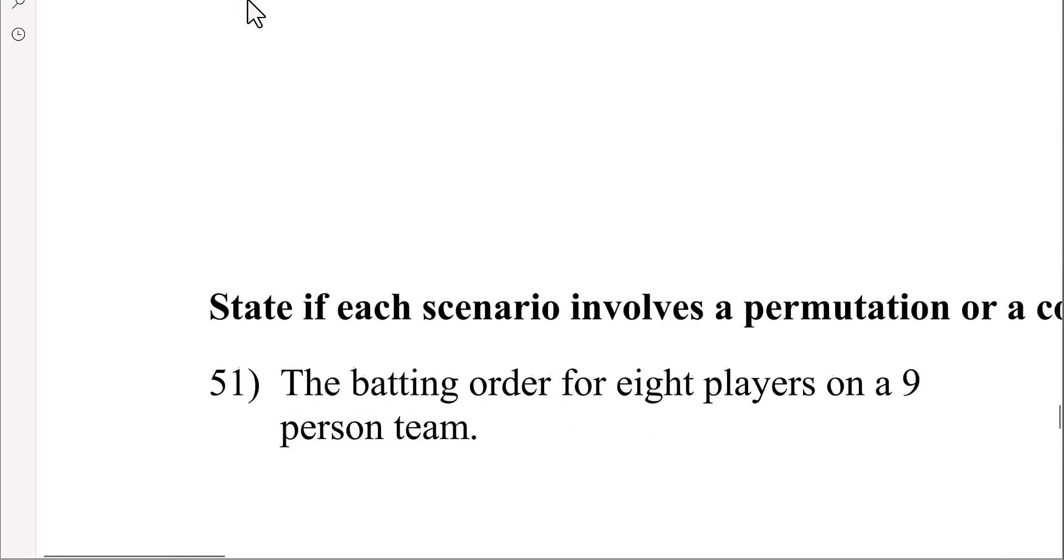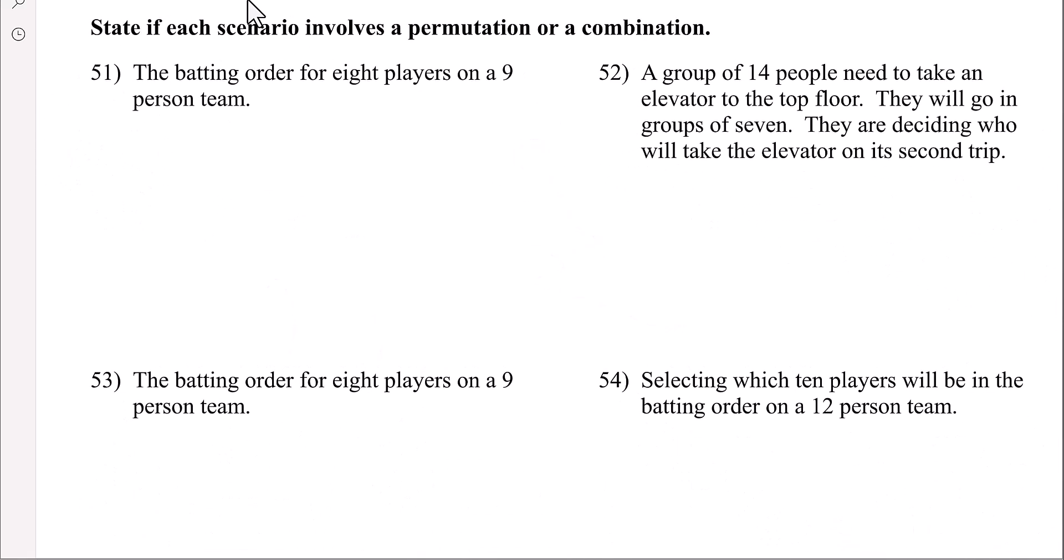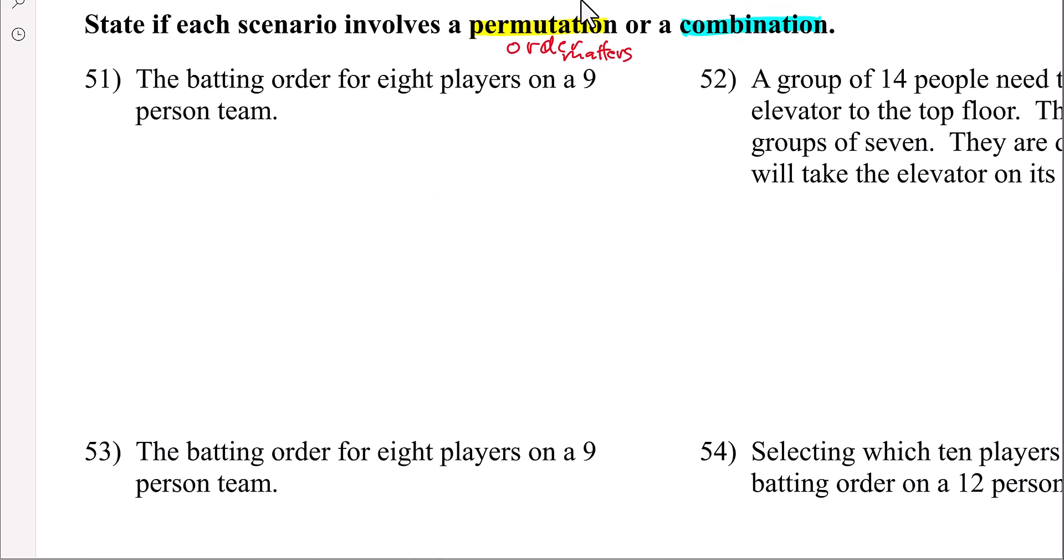Okay, I think that's all I'm going to do with permutation. Here we need to state if the order matters or doesn't matter. We have to decide, is this a permutation or a combination? Remember, permutation order matters. A batting team order for eight players on a nine-person team. Well if you talk to any coach, they're going to decide the order. So order matters. This would be a permutation.